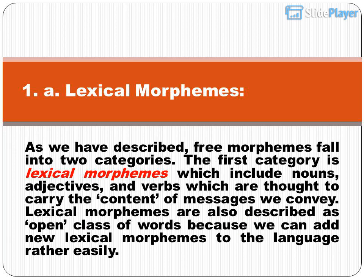Lexical morphemes: free morphemes fall into two categories. The first category is lexical morphemes, which include nouns, adjectives, and verbs, which are thought to carry the content of messages we convey. Lexical morphemes are also described as an open class of words because we can add new lexical morphemes to the language rather easily.